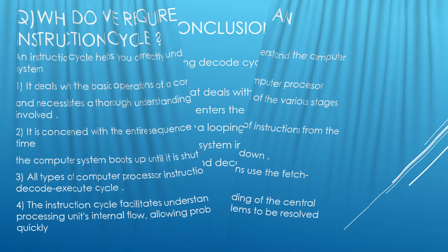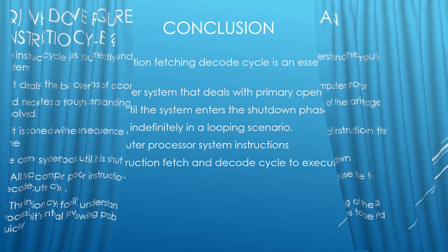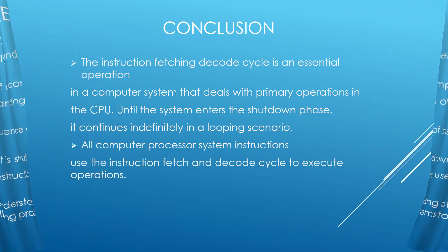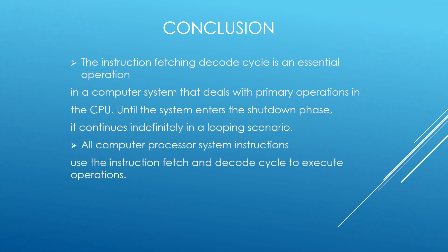Conclusion: The instruction fetch, decode, execute cycle is a crucial component of a computer system, involved in executing the primary operations of the CPU. The cycle runs continuously until the system is shut down, and all instructions executed by a computer processor go through the fetch, decode, execute cycle. The cycle helps understand the internal flow of the CPU, making problem solving easier.